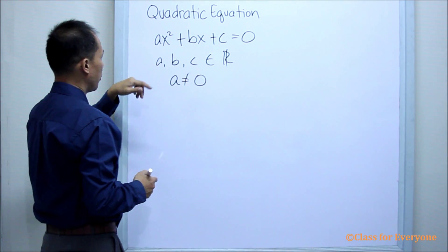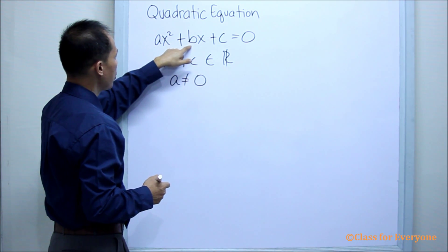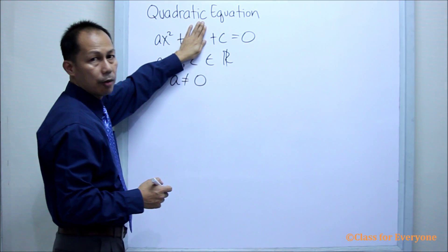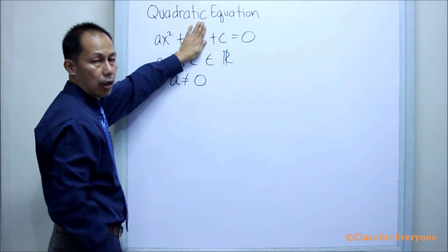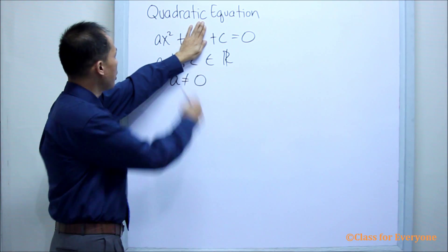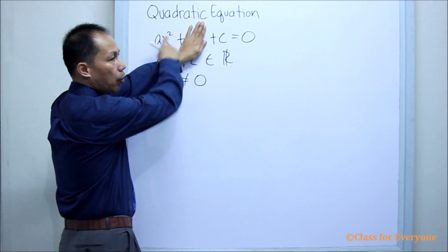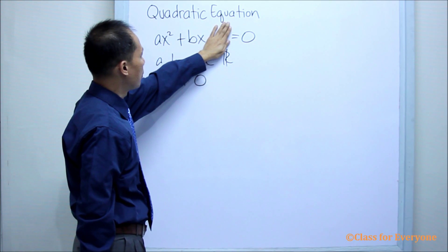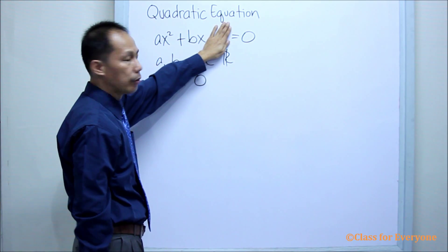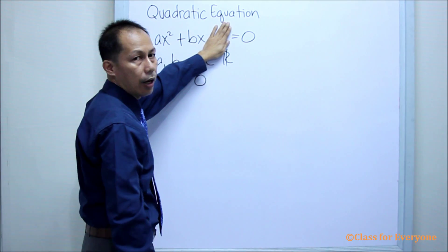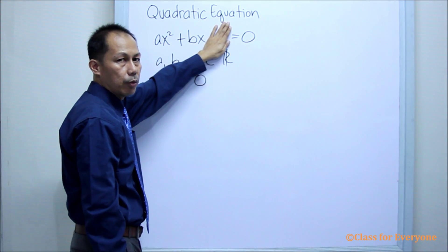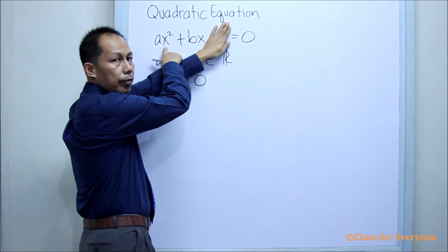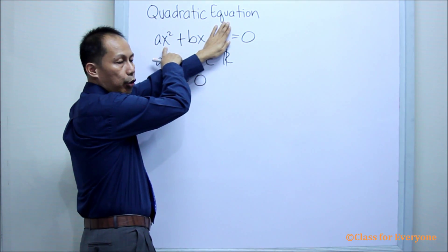So, if B is equal to zero, this can still be a quadratic equation because we still have a quadratic term. If C is equal to zero, we still have a quadratic equation because we still have a quadratic term.